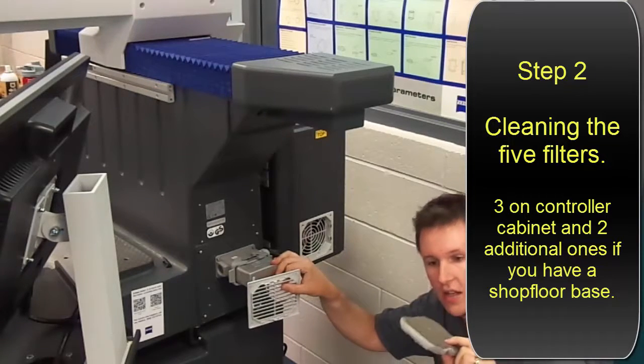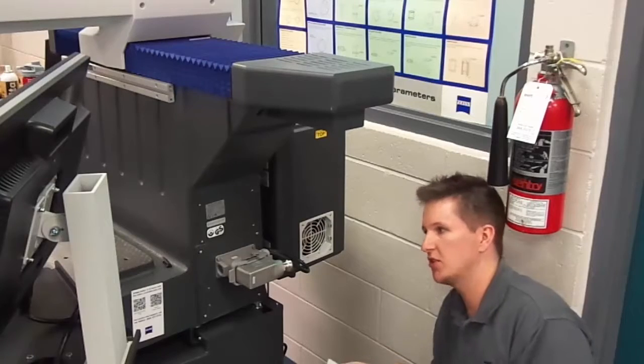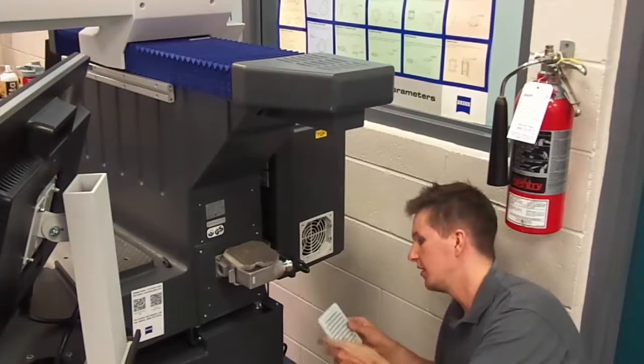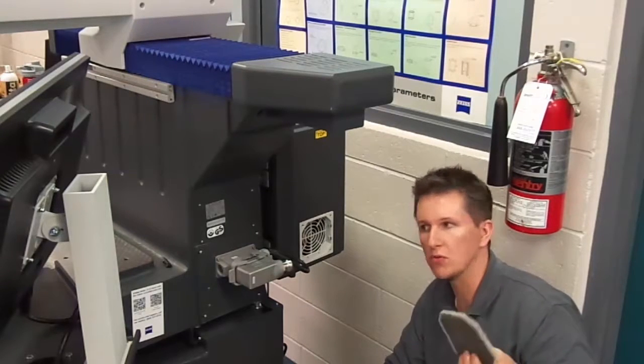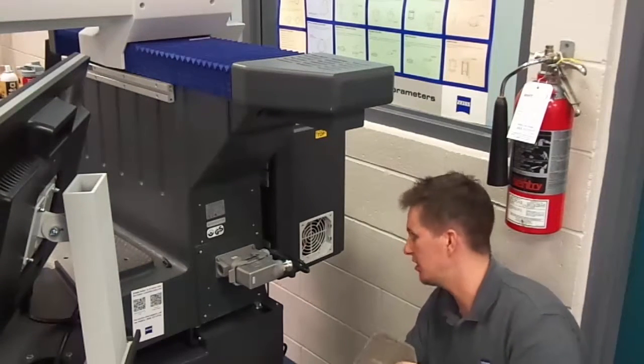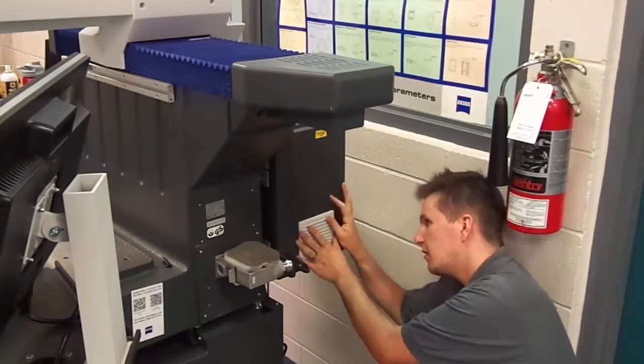Depending on the environment of your machine, you may have to do this monthly, weekly, every six months. It's just something you need to keep an eye on. You can buy filter material from basically anywhere - Home Depot, Lowe's, any of these places - and just cut it to size to fit it. Then just pop it back in with the cover, like so.